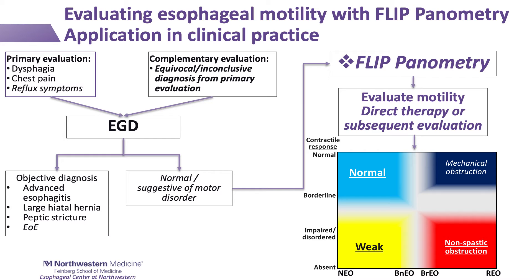When considering using FLIP as a manometry alternative, if a barium esophagram is completed prior to EGD, these findings can help set a pretest probability and facilitate confirming an esophageal motility diagnosis with FLIP planometry — potentially without the need for manometry during that initial endoscopy. There is also a role for FLIP in EoE, another use with potential promise, though not the focus of this talk.